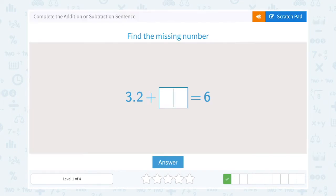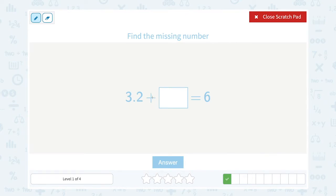3.2 plus some number is equal to 6. Okay, and we want to figure out what the missing number is. So again, we can do the same process. If 3.2 plus some number add up to or equal 6, well, if I subtract the number that I know, if I subtract out the 3.2,